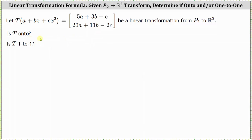Let's first test for onto. To be onto, every vector in the codomain R2 has at least one corresponding input degree 2 polynomial.